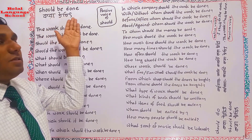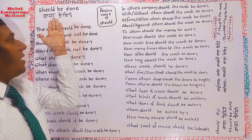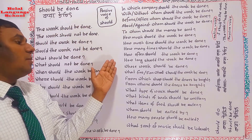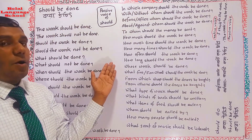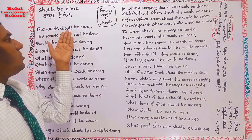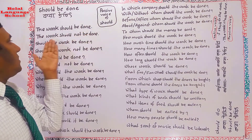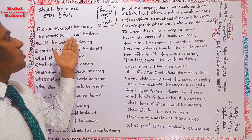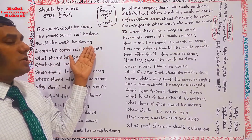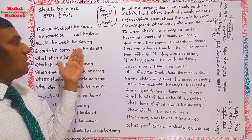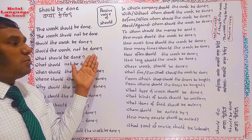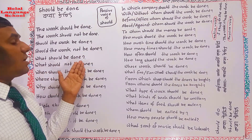In this way we place the verb and the object, and give the subject using 'should be done' — kora uchit. This is how 'should be done' works. 'Kaajti kora uchit' — the work should be done. And 'kaajti kora uchit na' — the work should not be done.